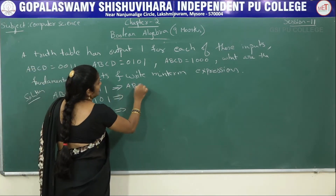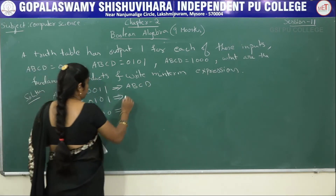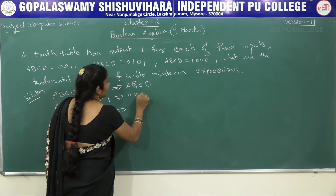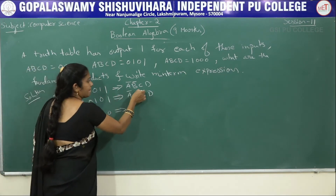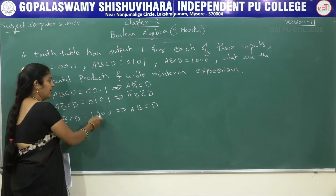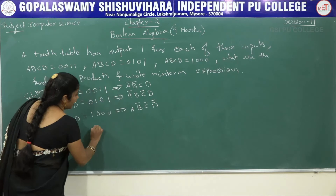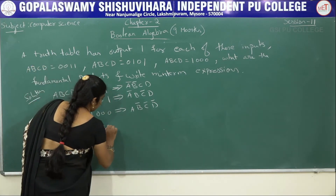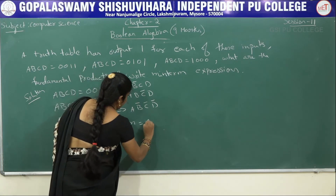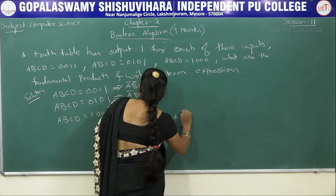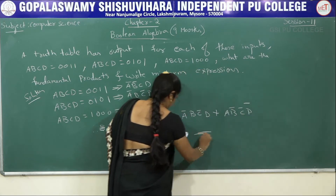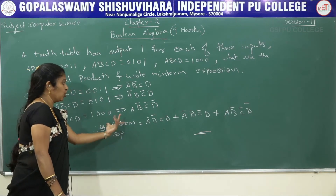Therefore the minterm (sum of product) expression equals: ĀB̄CD + ĀBC̄D + AB̄C̄D̄. This is the sum of product expression. The plus sign represents sum; where there is no operator it is the dot (product) operator. So this is sum of product form.